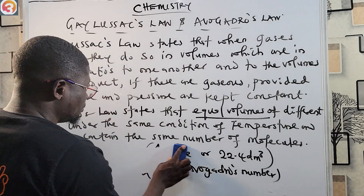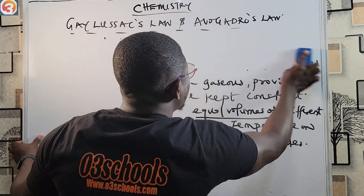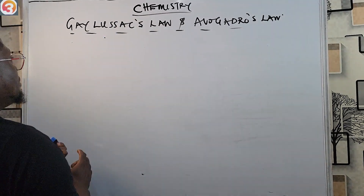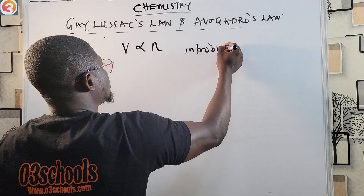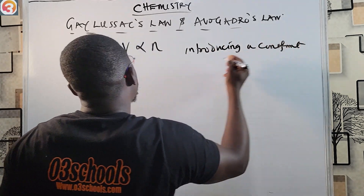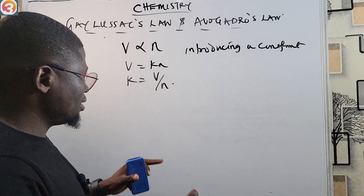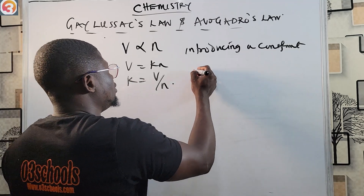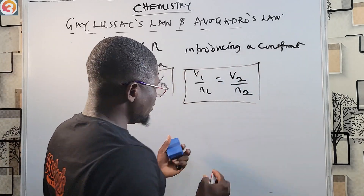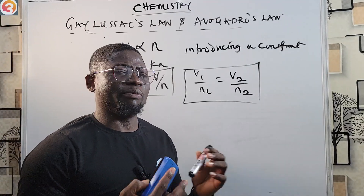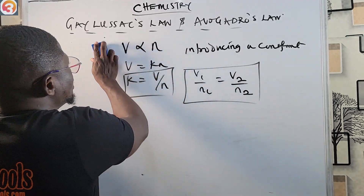Mathematically, Avogadro's Law states that V is directly proportional to n. Introducing a constant k, we have V = kn, which means k = V/n. For different volumes, this gives us V₁/n₁ = V₂/n₂. This is very important to note when it comes to Avogadro's hypothesis.